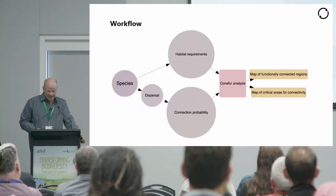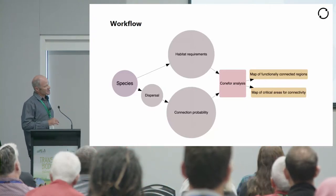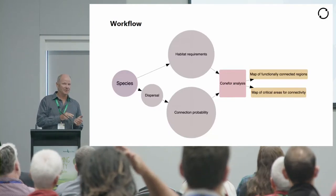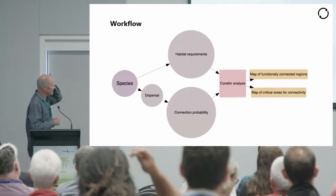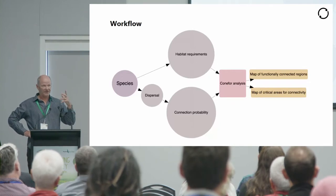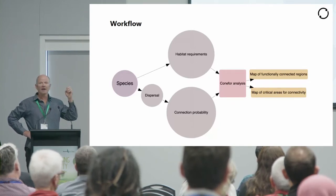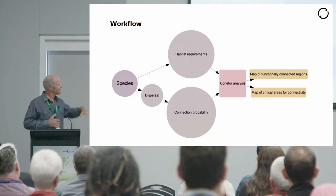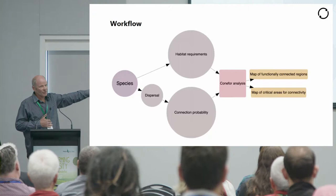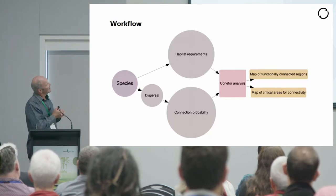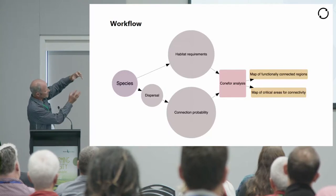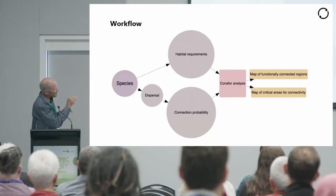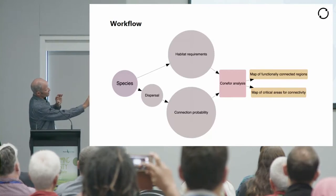The modelling approach starts with species on the left, looking at habitat requirements for three bird species: Robin, Tui, and Kakariki. Habitat requirements are based on expert opinion. They also look at the extent to which birds can disperse, using a connection probability based on the literature and expert opinion. These two inputs are combined into a conifor analysis, which outputs a map of functionally connected regions and the critical areas.